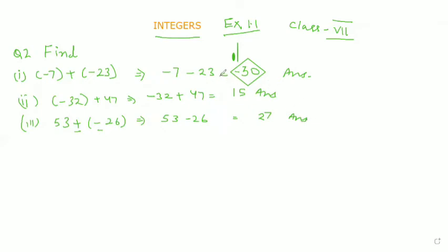Now come to the fourth part. The fourth part is (-48) + (-36). Here minus 48 plus minus 36 equals minus 84.